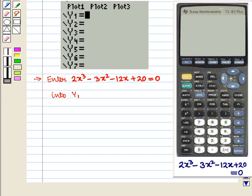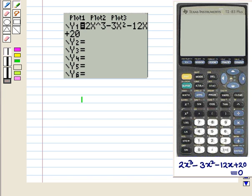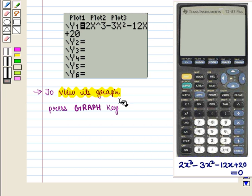Let us enter the equation 2x³ - 3x² - 12x + 20 = 0 into Y1. Now we will write this equation using the X,T,θ,n key. After writing the equation we will get this screen. To view its graph we press the GRAPH key.